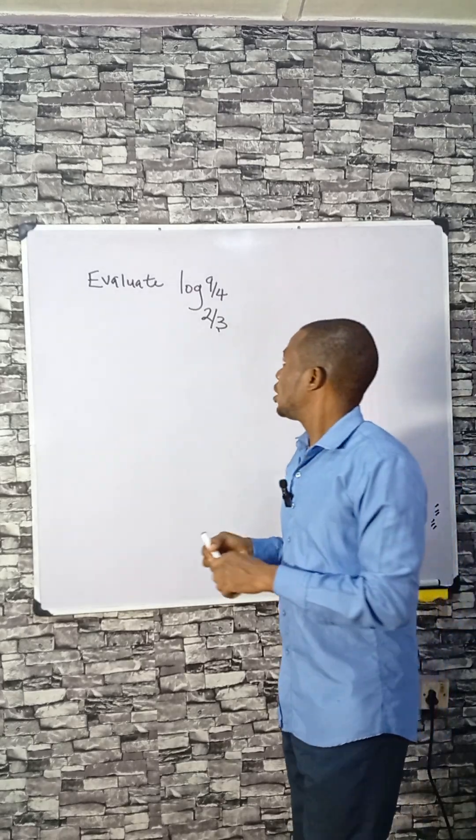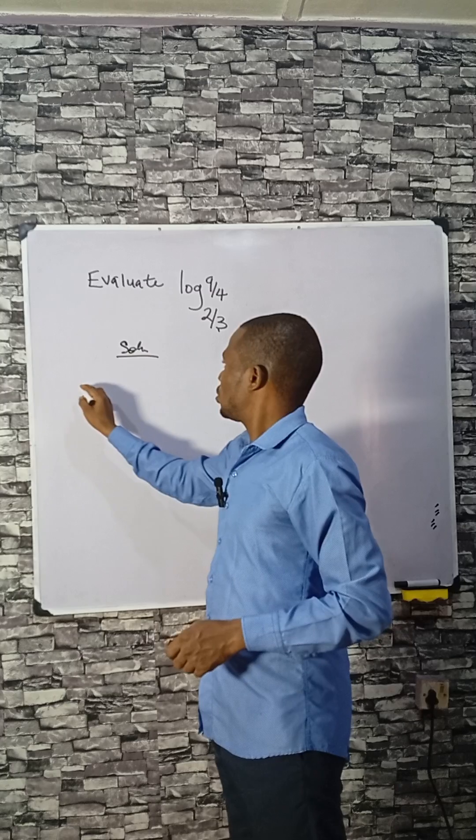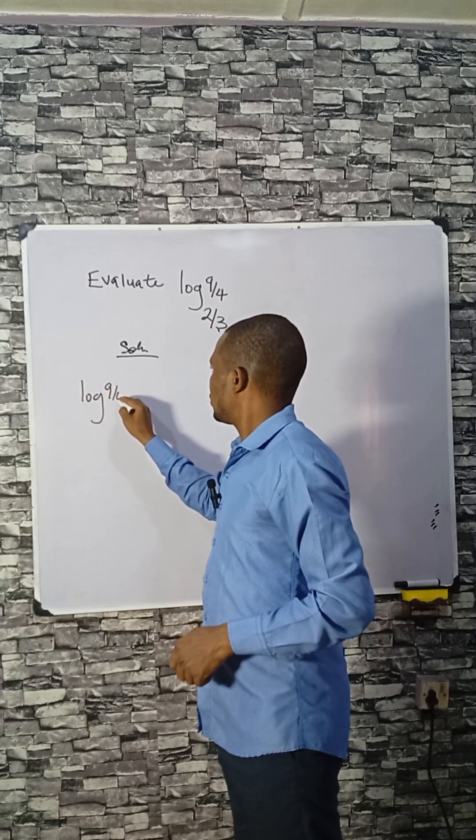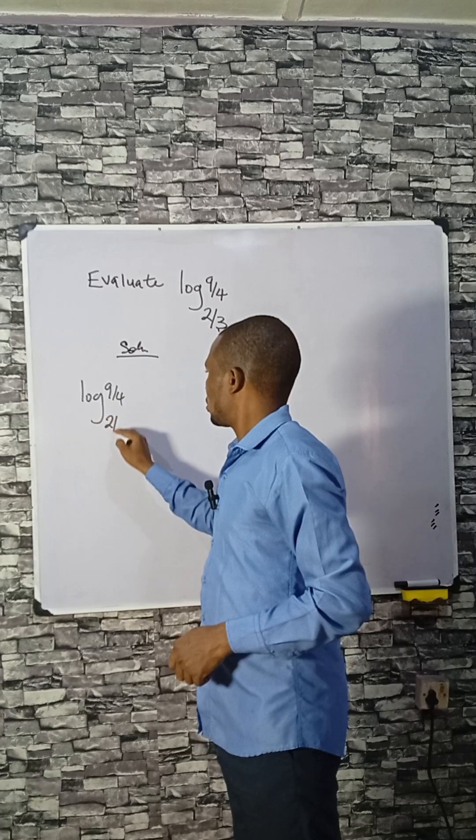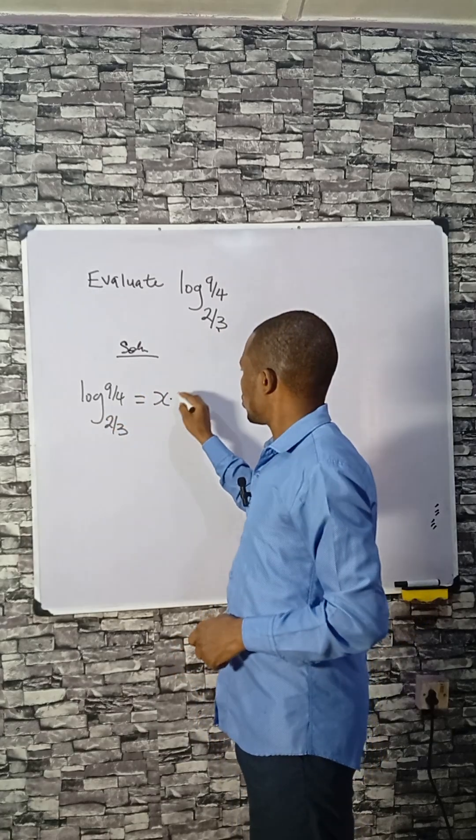Let's evaluate this. So let's log 9 divided by 4 base 2 over 3 equals to x, and this x is x times 1.